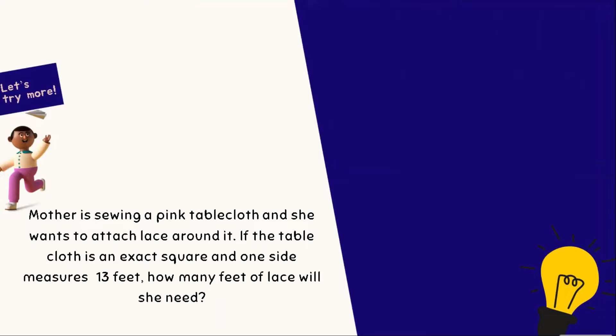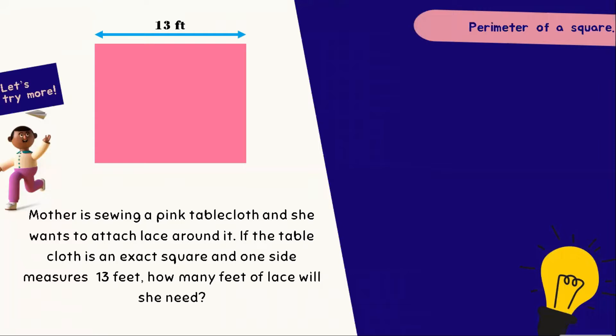We can have this next story problem. Mother is sewing a pink tablecloth and she wants to attach lace around it. If the tablecloth is an exact square and one side measures 13 feet, how many feet of lace will she need? To answer this, we can make use of the formula of finding the perimeter of a square.